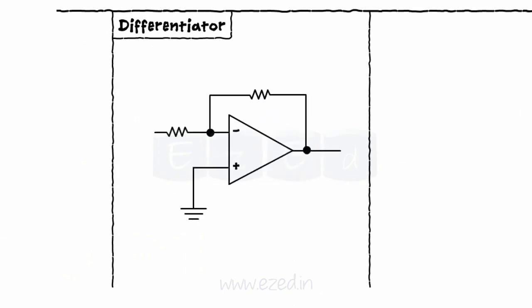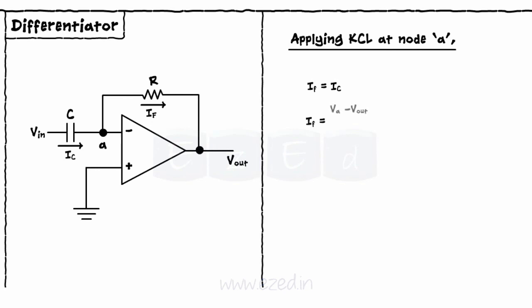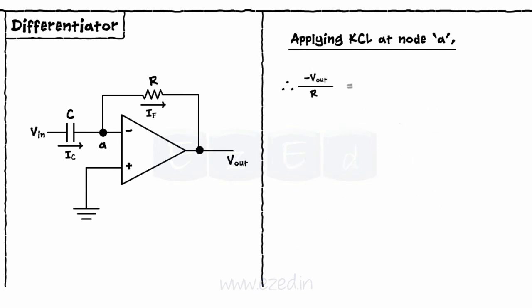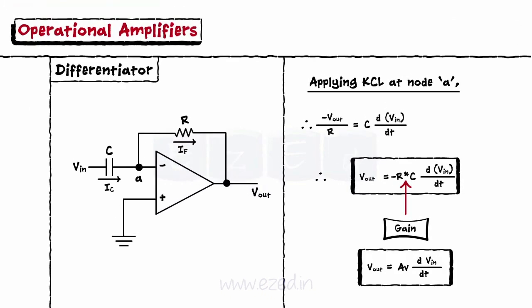For an op-amp as a differentiator, we replace the input resistor with a capacitor. Applying KCL at node A: i-f equals i-c. The current i-f equals v-a minus v-out upon R, and the current through the capacitor is C into dvc by dt. Hence, v-a minus v-out upon R equals C into d by dt of v-in minus v-a. Since v-a equals zero: minus v-out upon R equals C into dv-in by dt. Thus, v-out equals minus R into C into dv-in by dt. With R into C as the gain, the output is the differentiation of the input — hence the name differentiator.